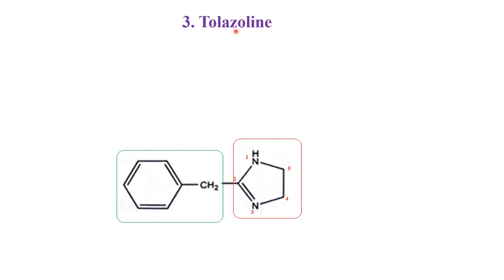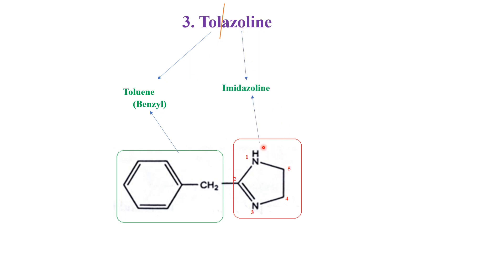We have tolazoline here. We can divide the word into two parts: 'tol' plus 'azolin.' The 'tol' indicates the presence of the toluene part, which is the benzyl one. This part is the toluene/benzyl part. And 'azolin' indicates the presence of imidazolin.